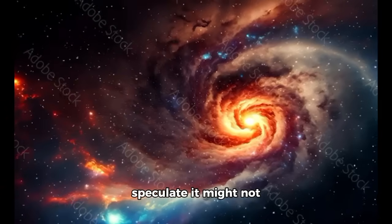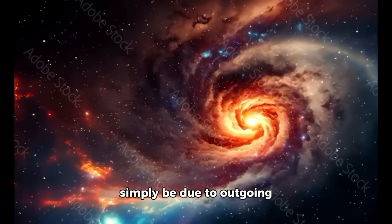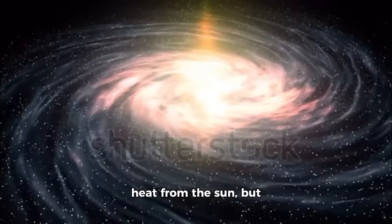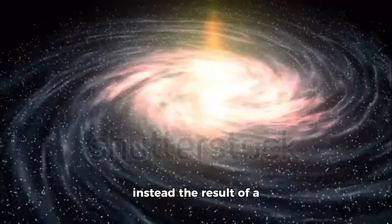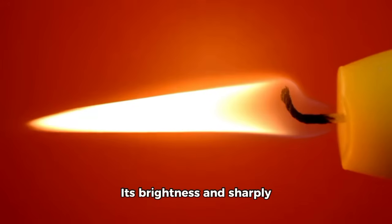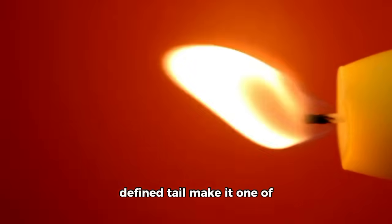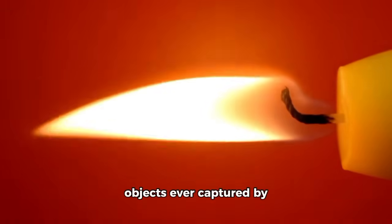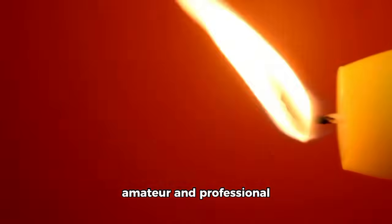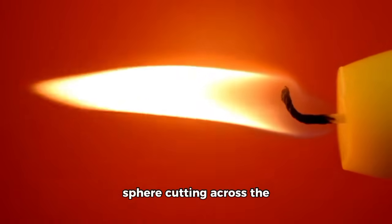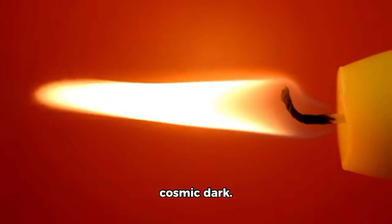The sheer scale of this tail indicates enormous energy or material release far beyond what a typical comet would produce. Some astronomers even speculate it might not simply be due to outgassing heat from the sun, but instead the result of a controlled or directed phenomenon. Its brightness and sharply defined tail make it one of the most visually striking objects ever captured by amateur and professional telescopes, like a glowing sphere cutting across the cosmic dark.